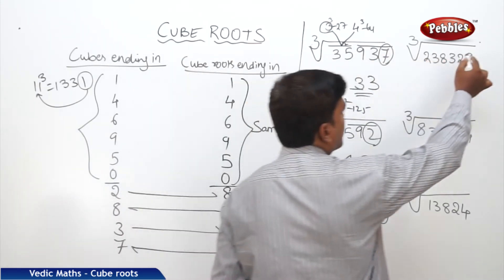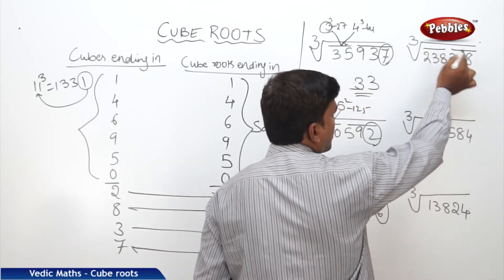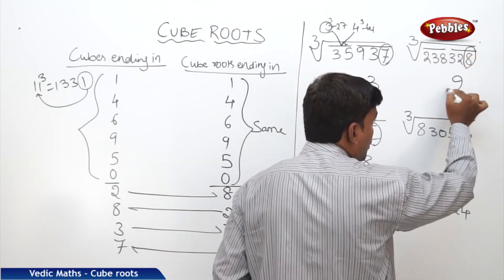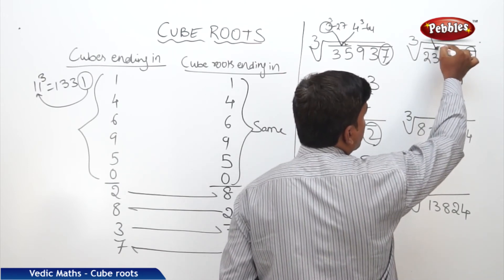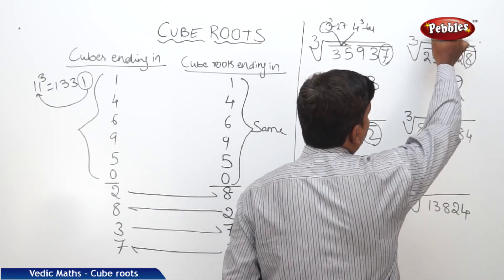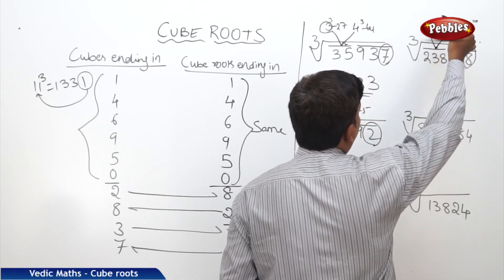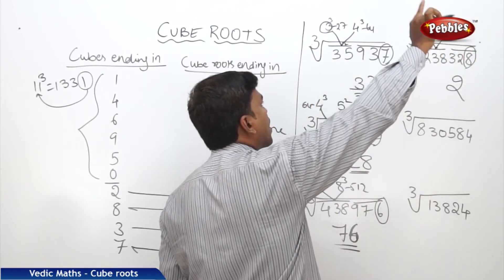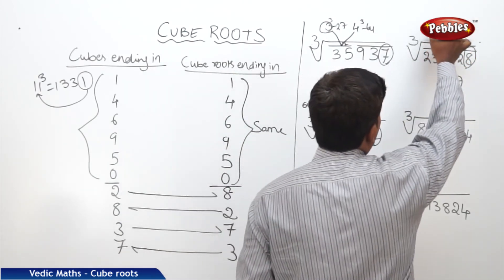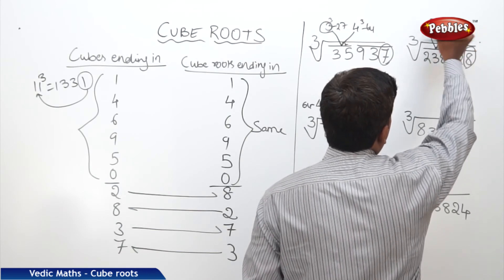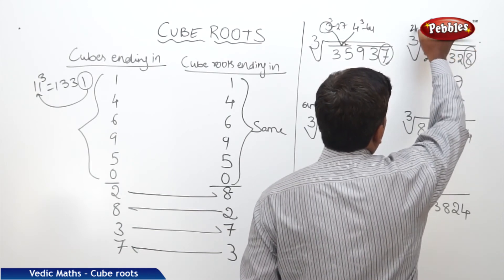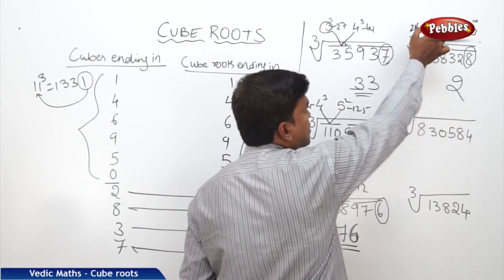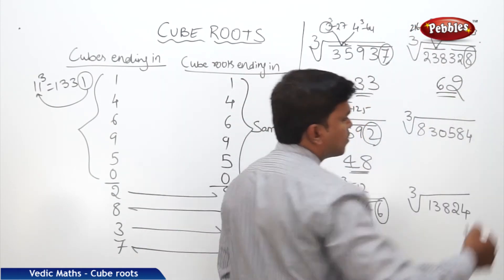The next problem: the cube number ends in 8, so the cube root should end in 2. The second partition is 238. The number 238 comes between 6 cubed (216) and 7 cubed (343). We take the lesser number, which is 6. So the answer is 62.